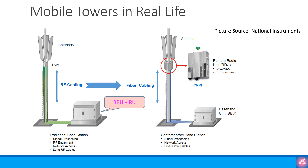The RF cable has high losses, so it makes sense to reduce their length. The image on the right shows the contemporary or modern approach where the baseband unit or BBU is in the cabinet, while the remote radio unit or RRU is at the top of the tower. A fibre is run between them which ensures there is no signal loss due to attenuation. For the rest of this video we will use this model.